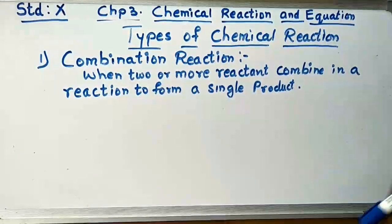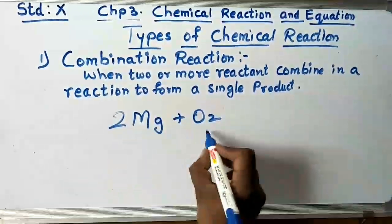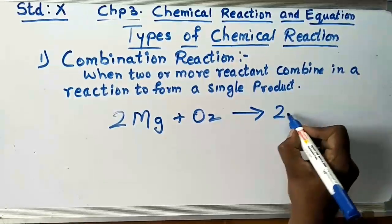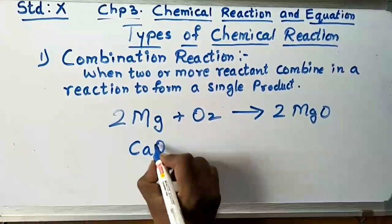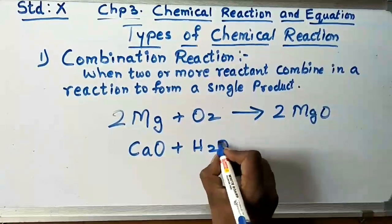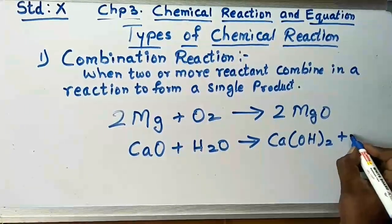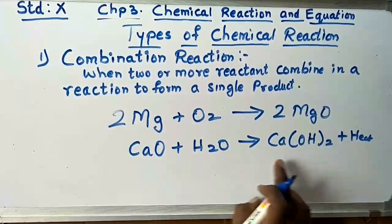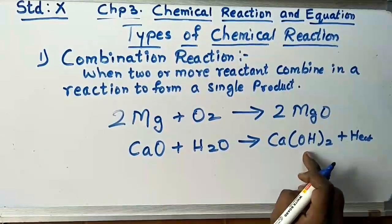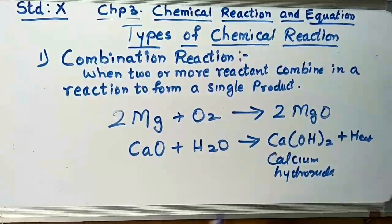Another example: magnesium strip — 2Mg + O2 forms 2MgO, a combination reaction. One more example: CaO (calcium oxide) plus water forms calcium hydroxide plus heat. You can verify it is balanced: 1 Ca, 2 oxygen, 2 hydrogen on both sides. So this is the example of combination reaction.